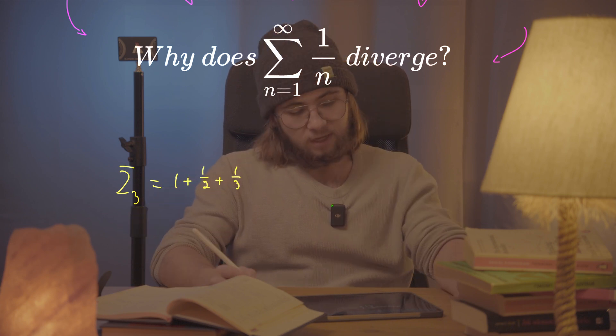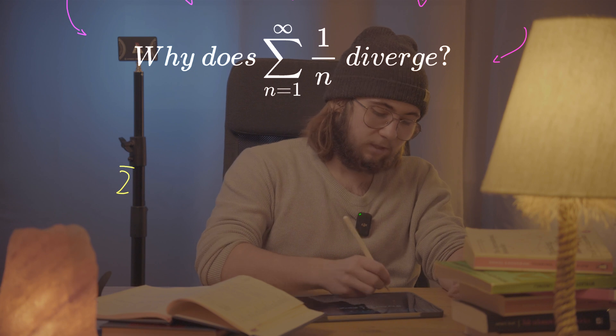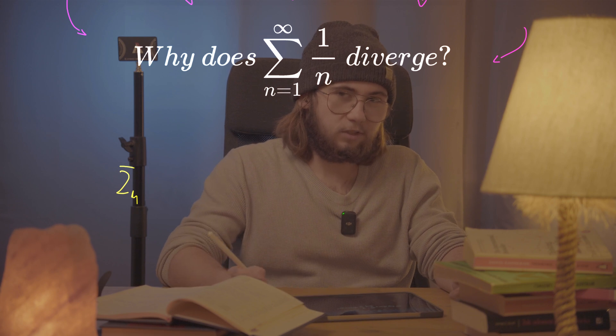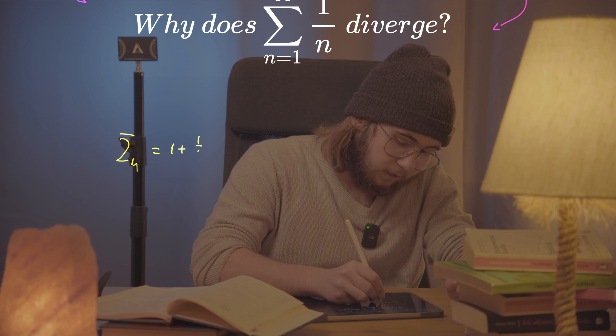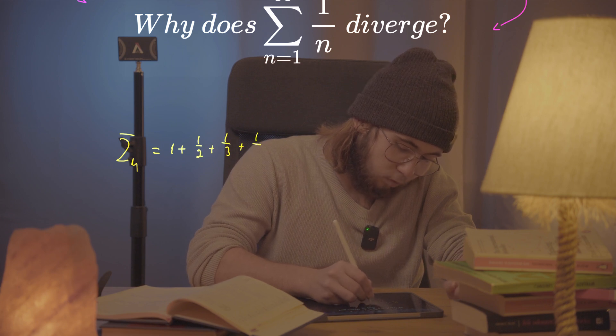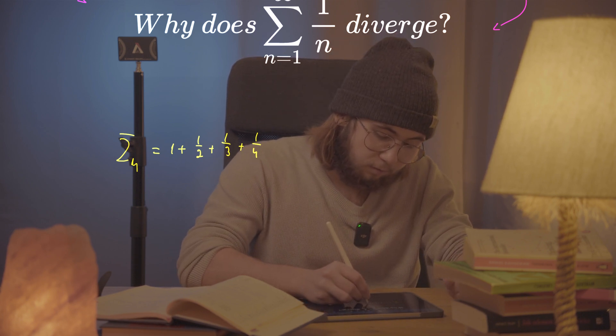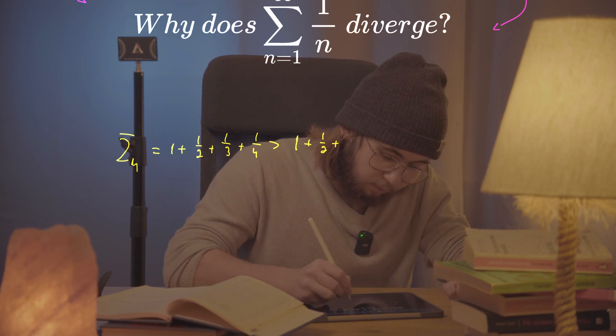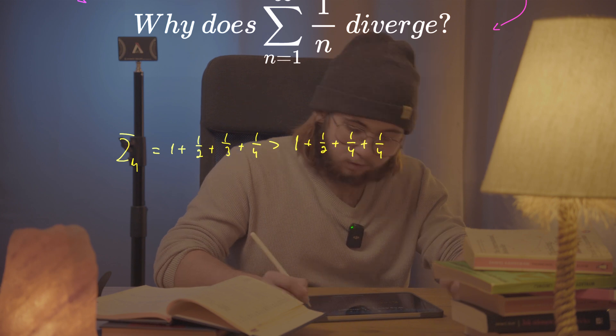Now I want to show you guys a pretty interesting fact. If I were to take the partial sum of the first four terms of this sequence, what is it going to give me? It's going to give me 1 plus a half plus a third plus a quarter. Well, you definitely will agree with me when I say that this thing right here is strictly greater than 1 plus a half plus a quarter and then plus a quarter.